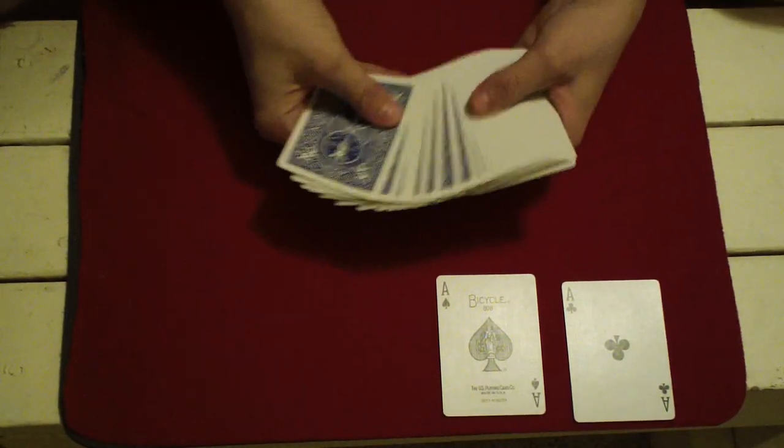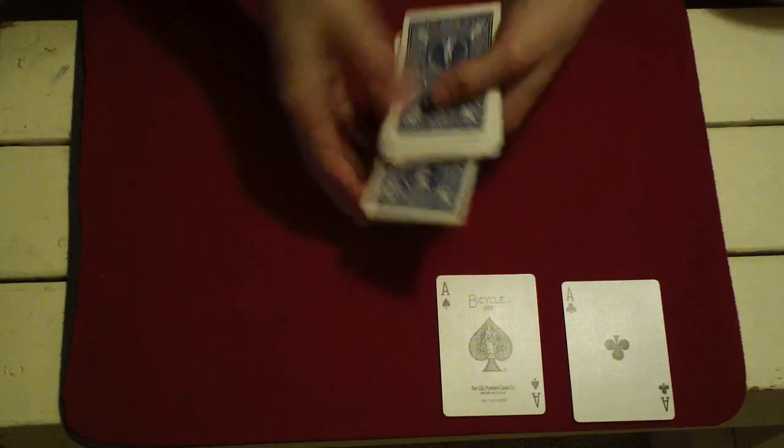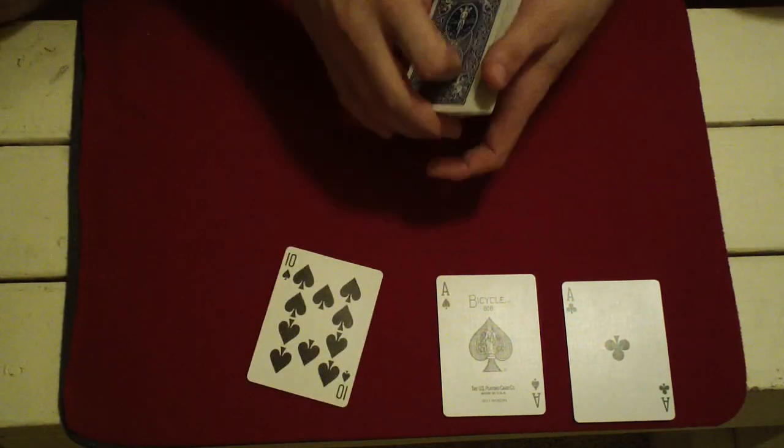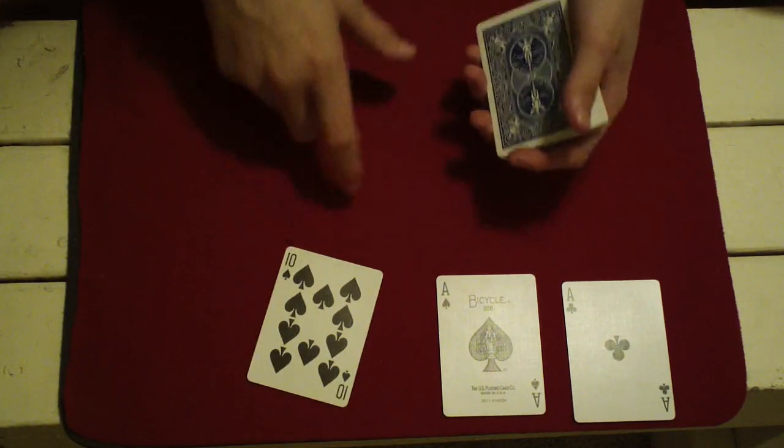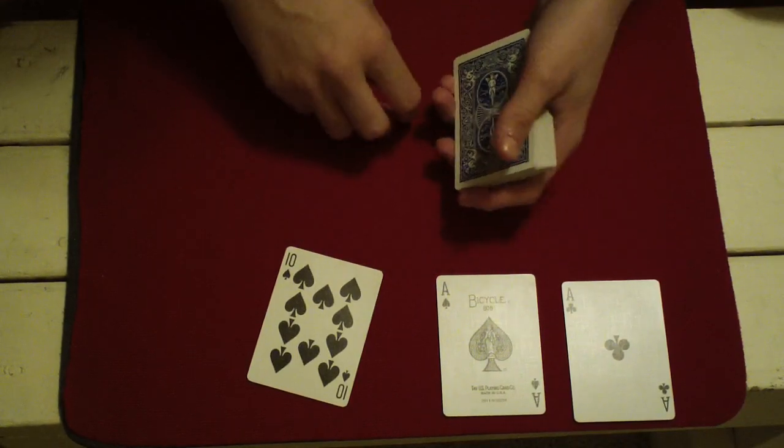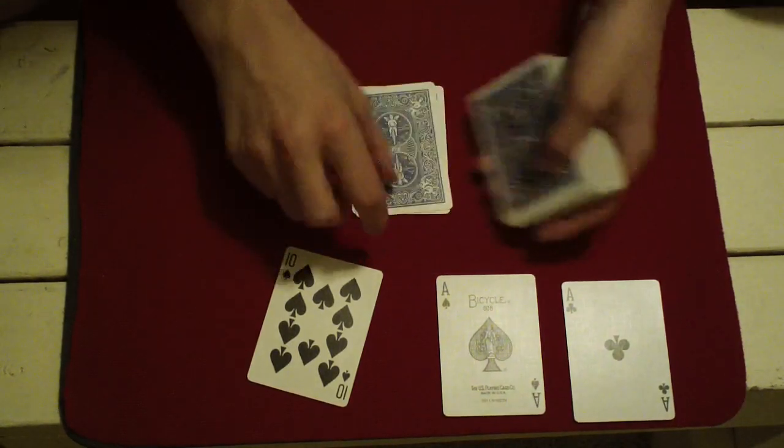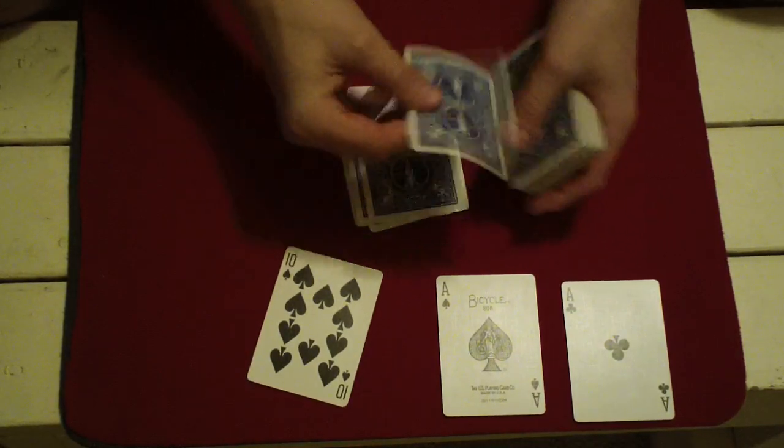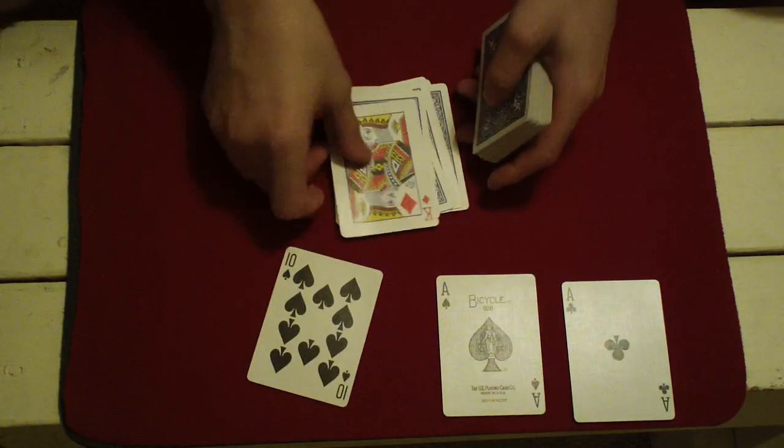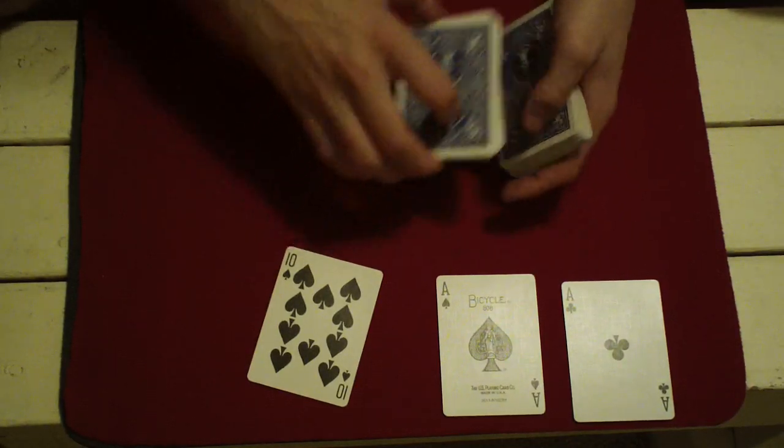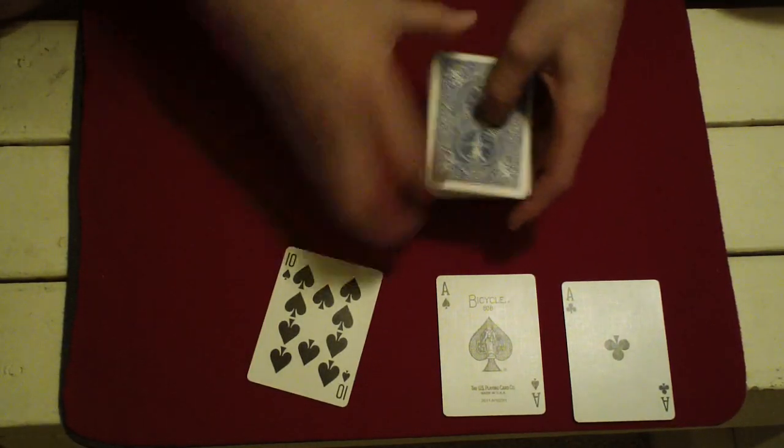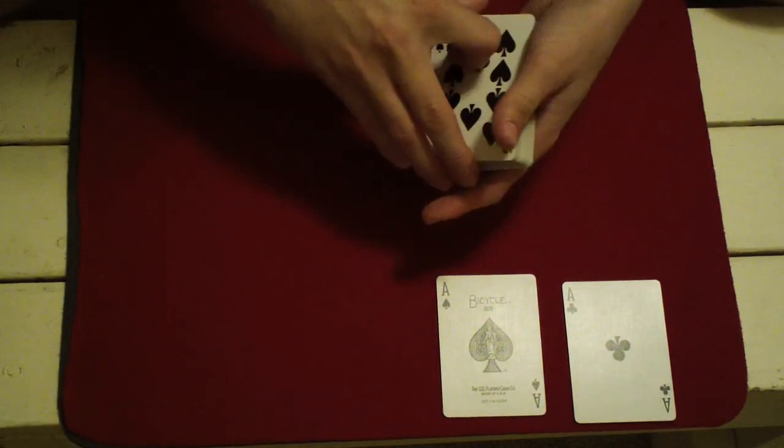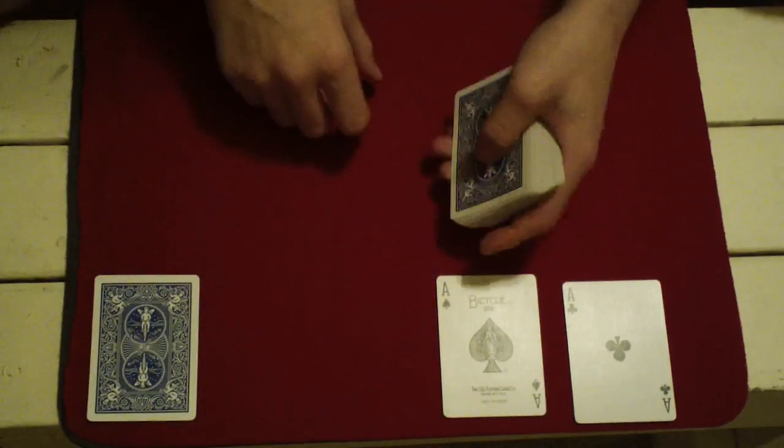And what I have the spectator do is go ahead and pick any card they want. So say they pick this one, the 10 of spades. Now what we're going to do is spell out 10 of spades and see if we can get the third ace. So let's see. T-E-N-O-F-S-P-A-D-E-S. Oh well that's not the ace. You know what, we'll just come back to this card later. Maybe it can help us out later in the trick when we need it more. So we'll just take the 10 and leave it right over there.